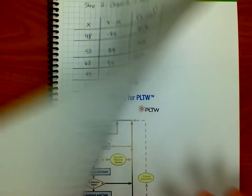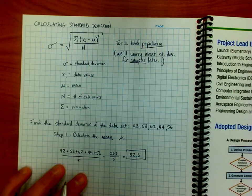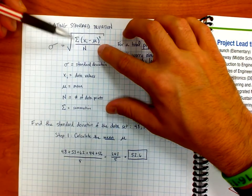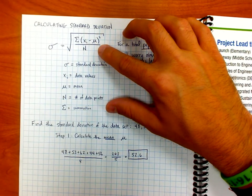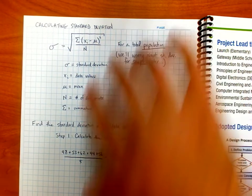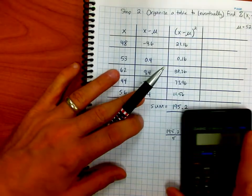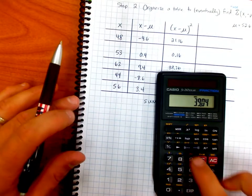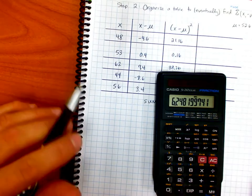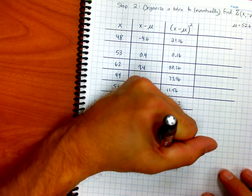My last step now, going back to the formula, is to take that 39.04 and square root it. Once I take the square root of that value, I have the standard deviation that I've been looking for the whole time. So the square root of 39.04 should be six point something. Six point two four eight.